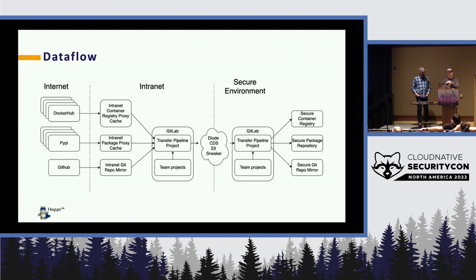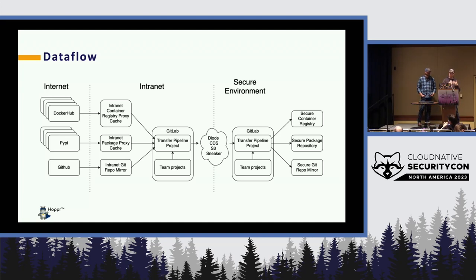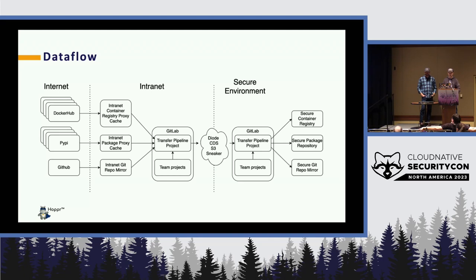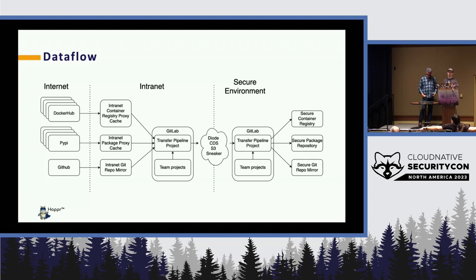Here's the data flow diagram. We break things into three areas. On the general internet side you have Docker Hub, Iron Bank, Quay, other container image sources, and multiple package repositories — plus stuff from GitHub, especially for Go, or Helm charts from GitLab. We pull things into internet instances for proxy caching, where we do a lot of scanning for security and vulnerability information. Then we transfer things across a diode using a GitLab pipeline. Teams define SBOMs and pull from internal references to define what needs to be transferred.